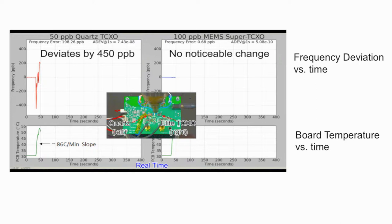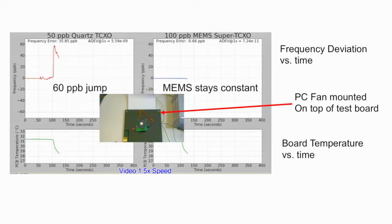The video and screen capture shows how the 50 ppb quartz TCXO responds immediately to this thermal stress and deviates to negative 450 ppb, which is 9 times the datasheet specification. By contrast, the MEMS frequency response is flat with small deviations less than or equal to 3 ppb. The air gun also has a secondary effect of inducing some vibration on the board. This outstanding MEMS performance is the result of the design and construction principles mentioned on the last two slides.